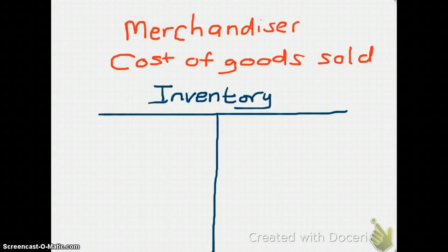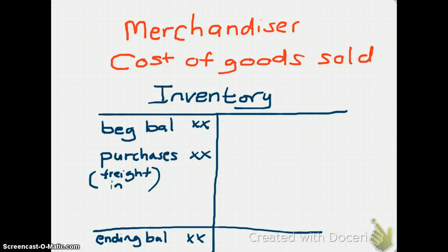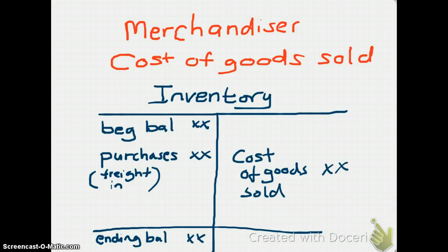We have our inventory T-account, and what it consists of is a beginning balance. Purchases of inventory increase your inventory balance. Don't forget, freight in on purchases is included in the cost of your inventory. So freight in and the cost of what you purchase increases your inventory balance. Then we have an ending balance that represents your inventory on hand at the end of the period. And then we have cost of goods sold, which decreases your inventory account.